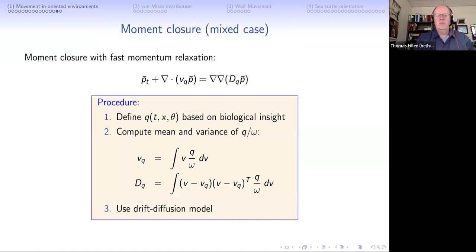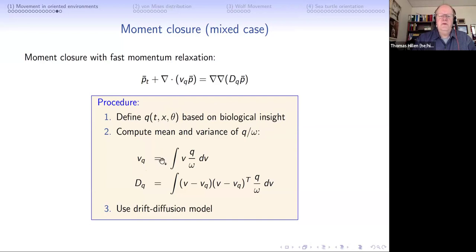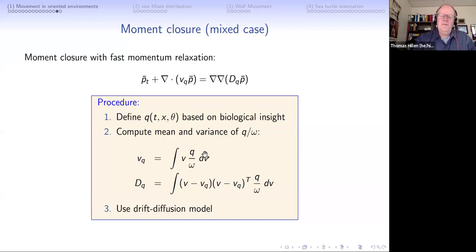With the moment closure approach you get both terms together: the drift term v_q and the diffusion term d_q. This leads to the procedure I use for sea turtles, wolves, and brain tumor modeling. We define q from biological insight using whatever imaging we have, then compute v_q the drift velocity and d_q the diffusion tensor by those formulas, and use this model to describe our sea turtle population.